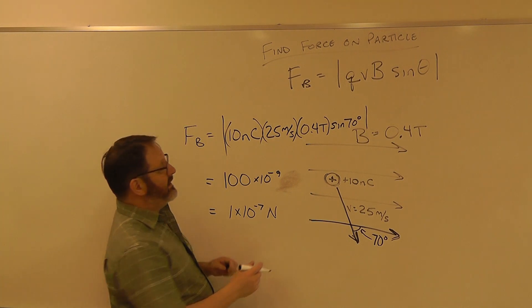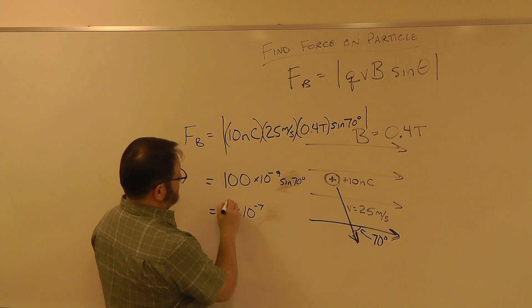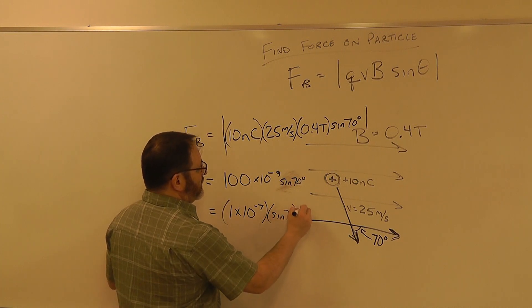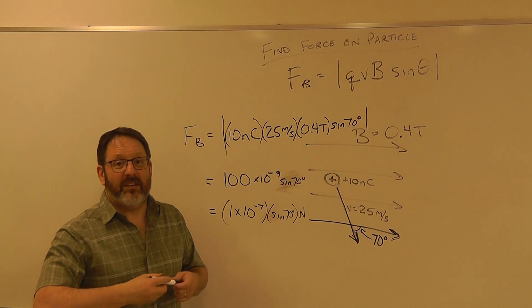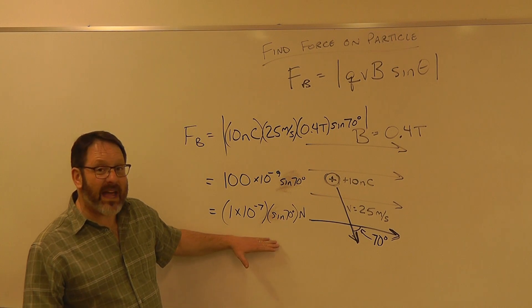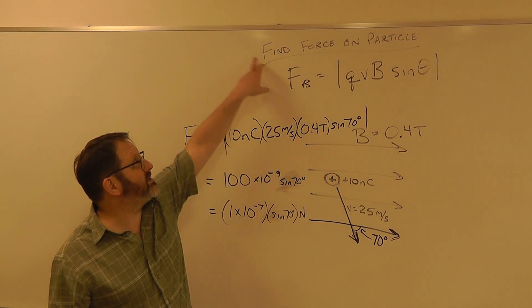Oh sorry, I forgot the sine 70. 1 times 10 to the minus 7 times sine of 70 degrees newtons. I don't know what the sine 70 degrees is, but I bet you have a calculator so you can work that out. So that is the magnitude of the force.